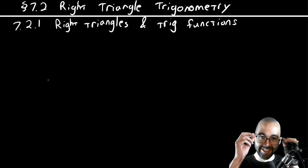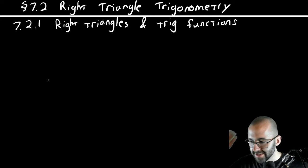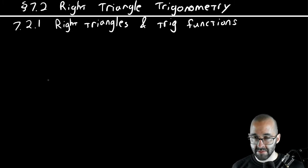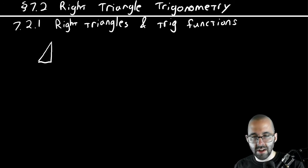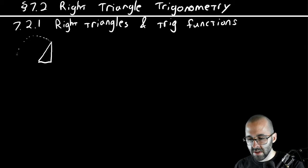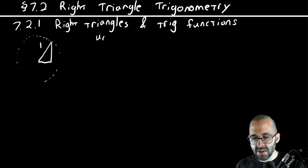Welcome to trigonometry — this is the real start of trig. We talked a little bit about angles in the previous videos, but this is where the real trig big guns are coming out. One of the main things we're going to be doing is thinking about and looking at triangles inscribed in a unit circle. The hypotenuse is the radius of the circle — a unit circle just means the radius is one.